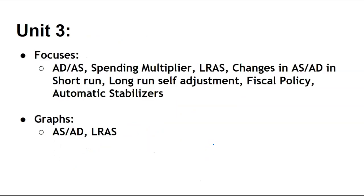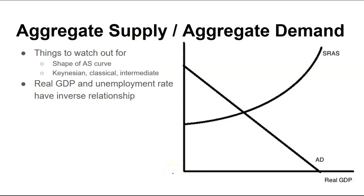Unit 3 is one of the bigger ones: ASAD, spending multiplier, LRAS, change to ASAD, long-run self-adjustment, fiscal policies, automatic stabilizers — and the graphs are ASAD and the LRAS. For the aggregate demand and aggregate supply, things to watch out for are the shape of the aggregate supply curve.